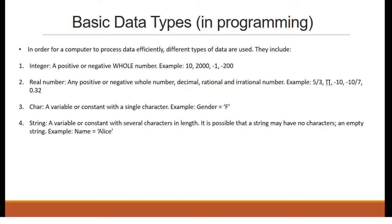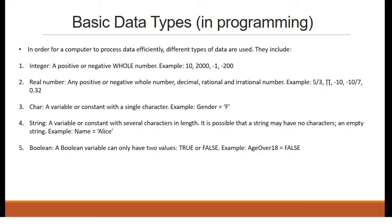String: a variable or constant with several characters in length. It is possible that a string may have no characters — this is called an empty string. For example, name is equal to Alice. Boolean: a boolean variable can only have two values, true or false. For example, age over 18 is equal to false.